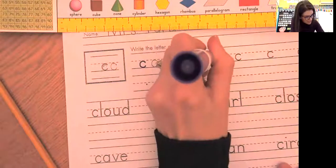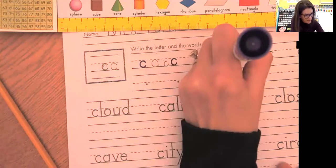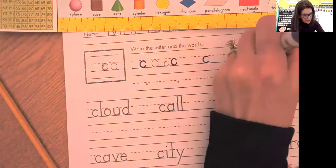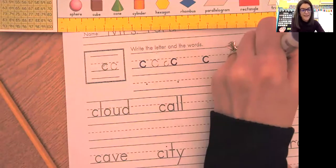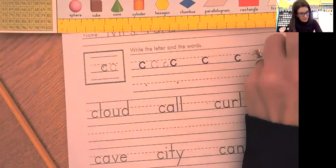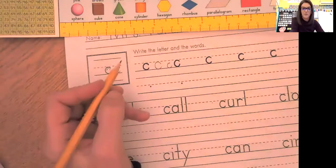So again, we can trace all of our Cs here. Remember when we trace, we trace so slow that our marker should never really go outside the black line. That's when you know that you're really taking your time when you're tracing. Then you're going to come down here and write Cs on your own.